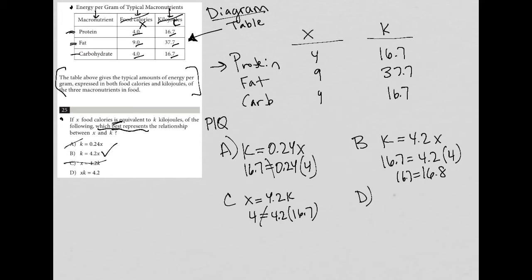Lastly, we have D. D says that X times K equals 4.2. For protein, that means 4 times 16.7 should equal 4.2, and that's also not true. Although 16.7 is not exactly the same as 16.8, this is the best answer. The question did say which best represents the relationship, not which one is equivalent to the relationship. Choice B is the best answer.